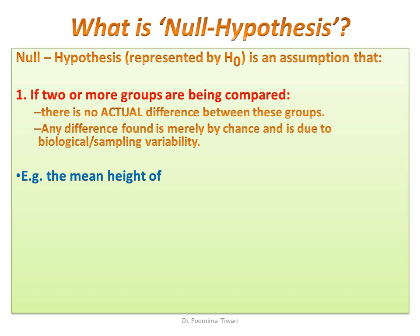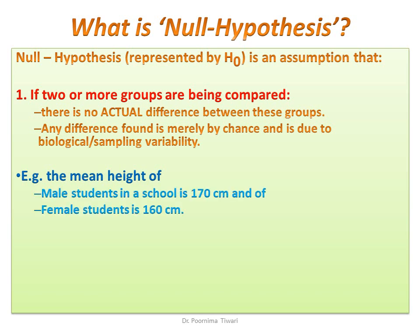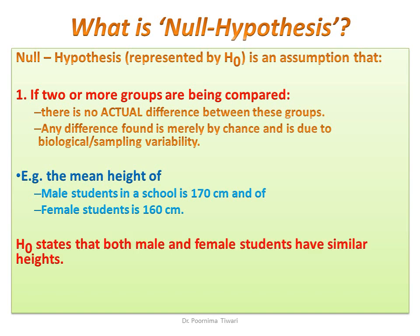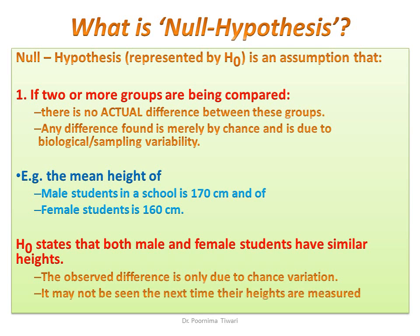For example, the mean height of male students was found to be 170 centimeters and that of female students was found to be 160 centimeters, but the null hypothesis states that both male and female students have similar heights and that the observed difference is just because of chance or biological variation, and next time you do the measurements again, this difference may not be there.